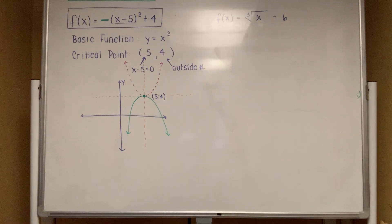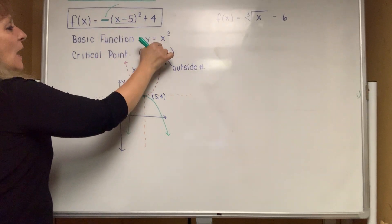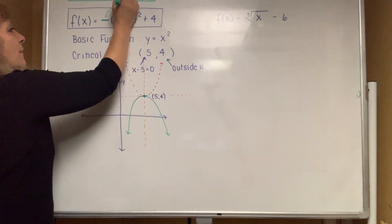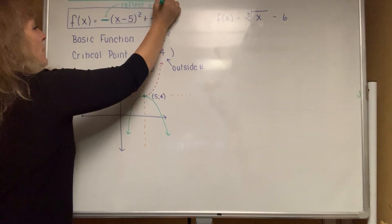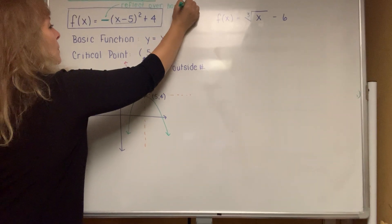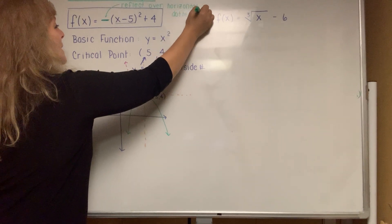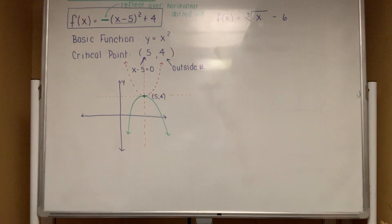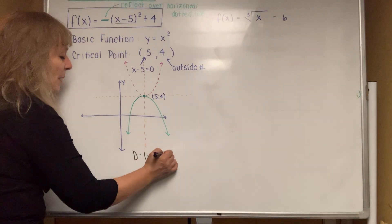Any time there is a negative sign in front of that basic function identifier, you have to reflect over the horizontal dotted line. Make sure you have that written down so you remember. The domain of every single parabola is always going to be negative infinity to positive infinity.